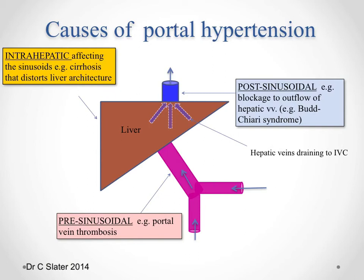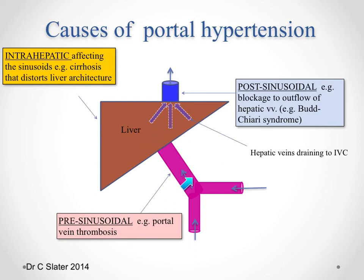The next cause is intrahepatic portal hypertension, the commonest being cirrhosis. There are many causes of cirrhosis, with alcohol being a very common one. The resultant destruction of liver architecture impedes the flow of blood coming from the portal system, running through the liver sinusoids to exit into the inferior vena cava. That obstruction results in increased pressure of blood in the portal system.